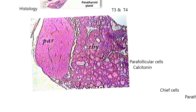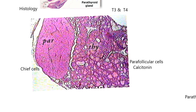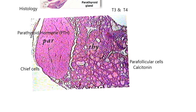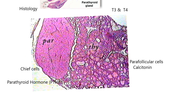In the parathyroid gland are chief cells, which are actively secreting the hormone from the parathyroid gland - parathyroid hormone, often abbreviated PTH. So PTH is coming from the parathyroid gland. Parathyroid hormone comes from the parathyroid gland - what a fitting name.